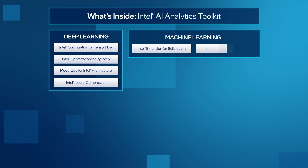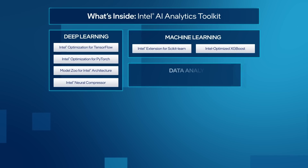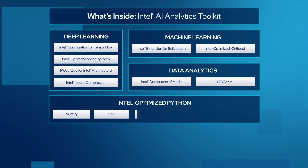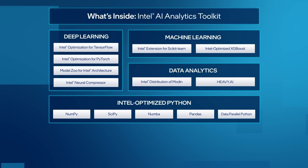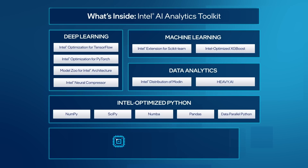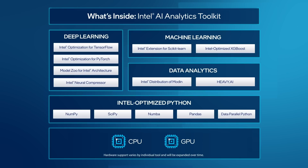Optimized scikit-learn and XGBoost accelerate machine learning. Optimized Modin and heavy.ai boost data analytics. And refined core Python libraries help offload AI workloads to get the most performance and scale out of data parallel architectures. Altogether, the Toolkit delivers powerful end-to-end solutions for scientific computations and big data analysis.